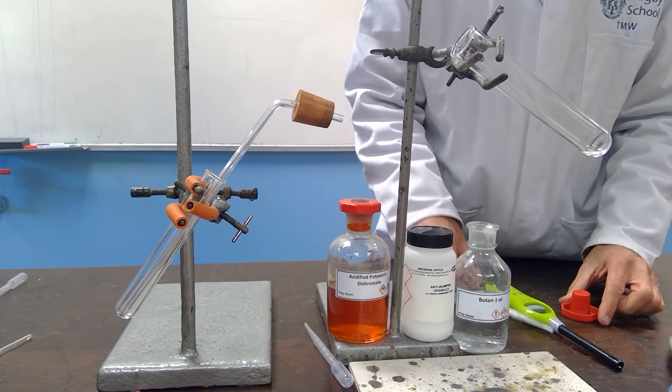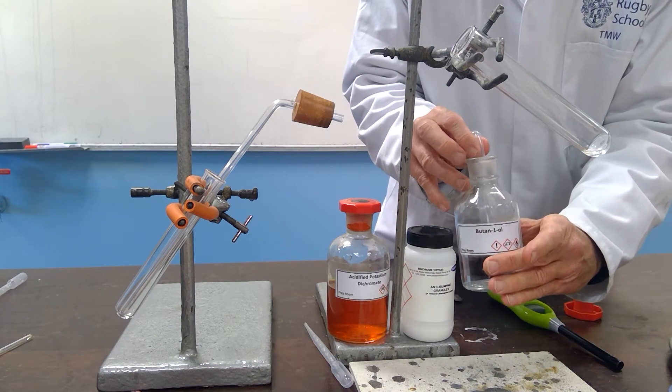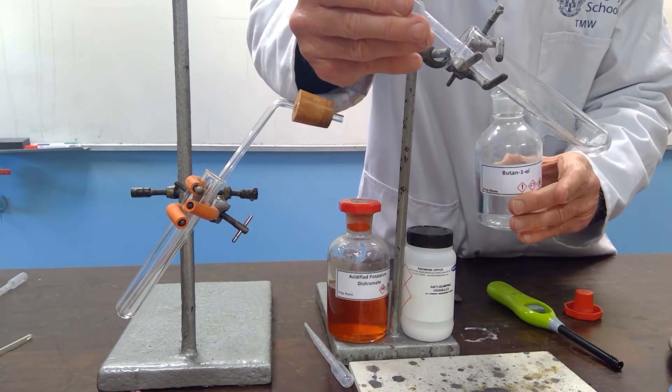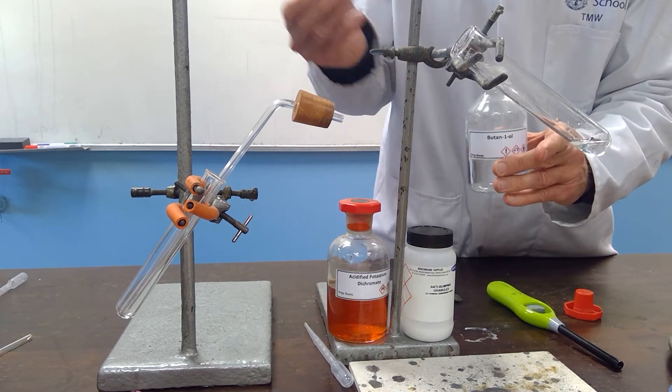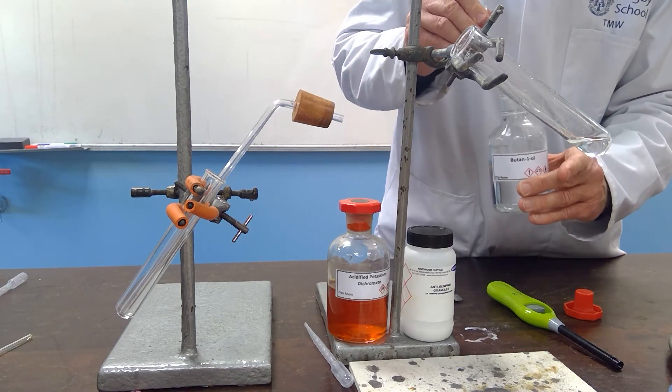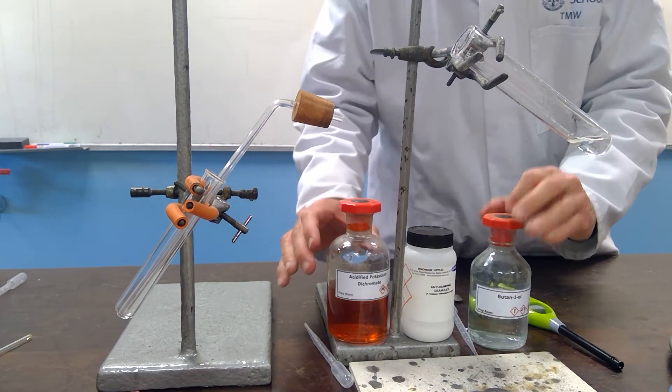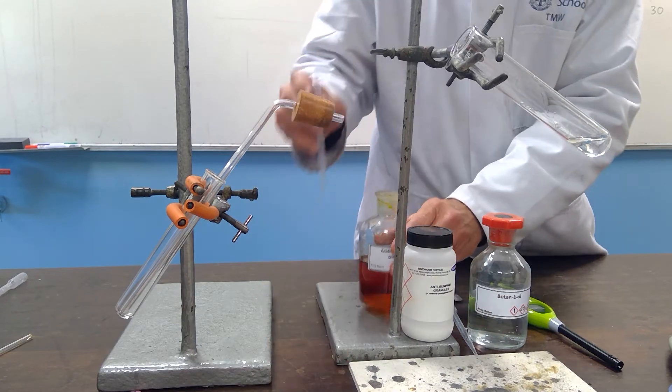So, in order to distill over the products as they are formed, we will take some of the butan-1-ol, as we did before, and react that with the acidified potassium dichromate once again.